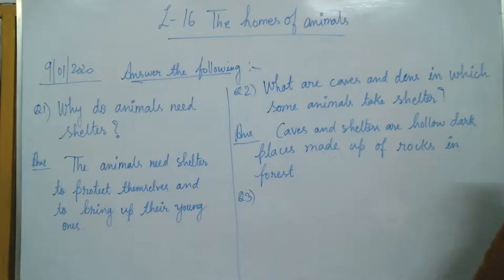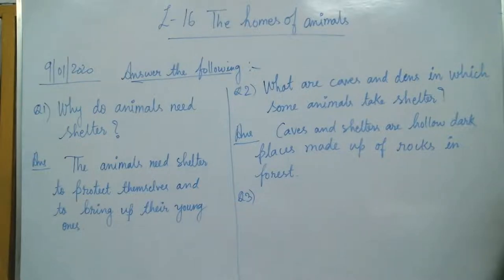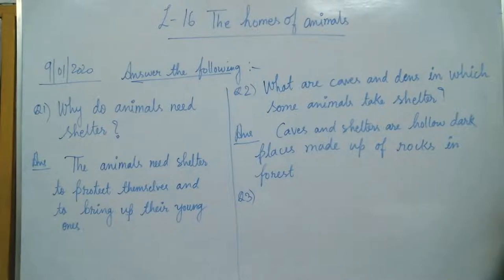I am going to read it for you. Question number one: Why do animals need shelter? The animals need shelter to protect themselves and to bring up their young ones. Question two: What are caves and dens in which some animals take shelter? Caves and dens are hollow dark places made up of rocks in the forest.